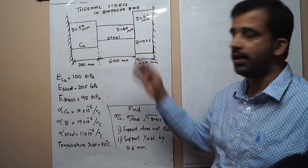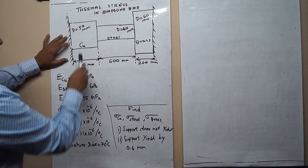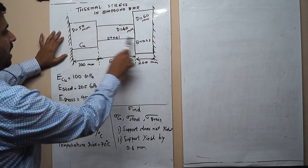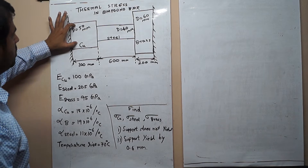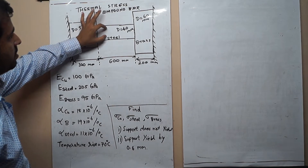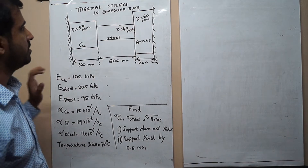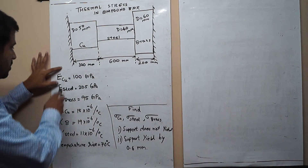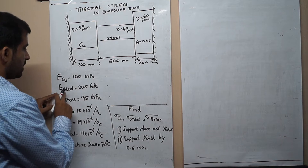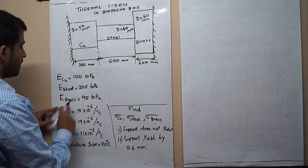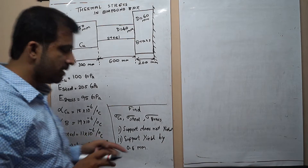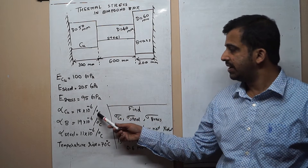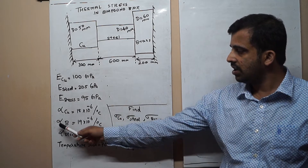This is our compound bar — a stepped bar made up of copper, steel, and brass. The diameter of the copper section is 50 mm, the steel section is 40 mm, and the brass section is 60 mm, with circular cross-sections throughout. The modulus of elasticity for copper is 100 GPa, for steel is 205 GPa, and for brass is 95 GPa.